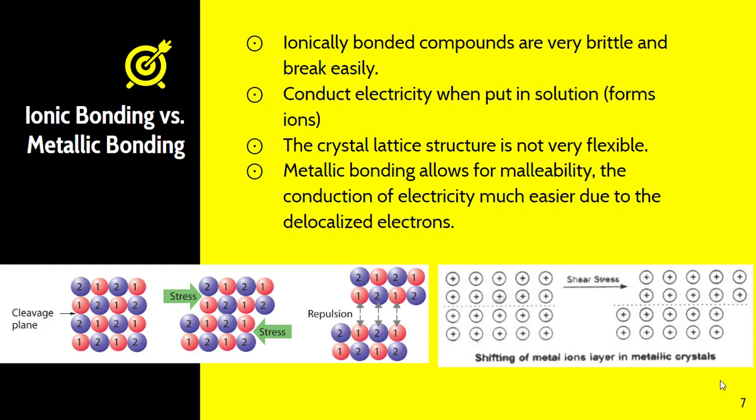We don't have a lot of those negative and positive repulsions in there, even when the individual atoms are moved or stress is put upon the metal. So as a result, metallic bonding results in metals being far more malleable.